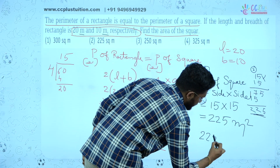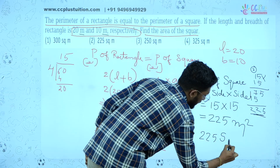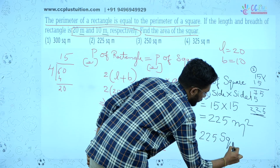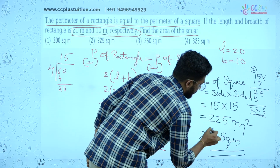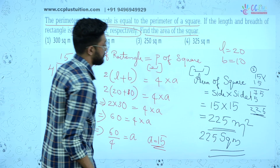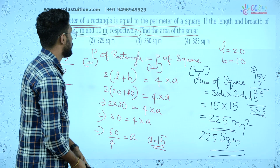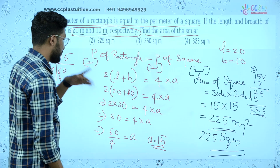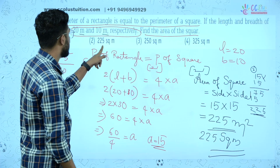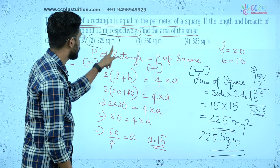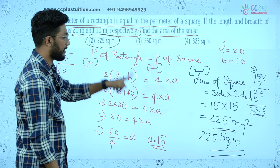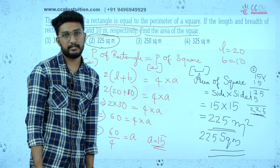225 square meters. If you have two answers, that is correct. Option: 225 square meters.